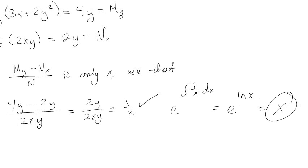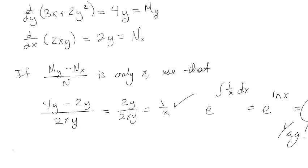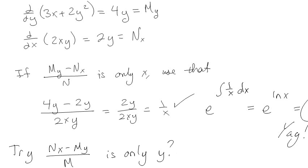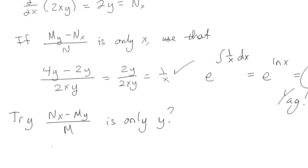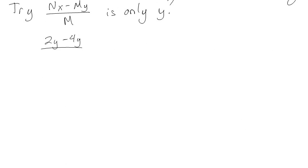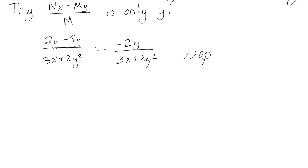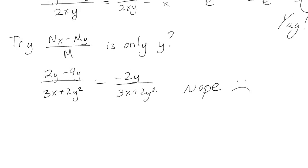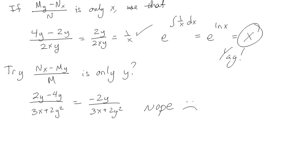Using that, we compute e to the integral of (1/x) dx, which is e to the natural log of x, which is just x. And if you remember, that is exactly what we multiplied the whole equation by and it worked. Now just to show the other formula doesn't work: (Nx - My)/M = (2y - 4y) / (3x + 2y²), and clearly this is not just a function of y, so we can't do anything with that. But we were able to find the integrating factor using the first method.